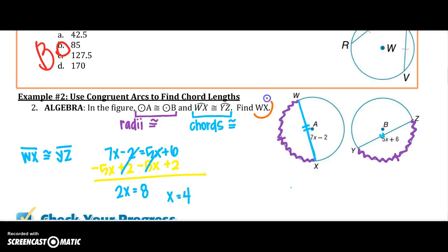Well, it does ask for WX, so WX equals 7X minus 2. So I'm going to plug that answer, 7 times 4 minus 2. So WX is 26 units, which would also make YZ 26 units.